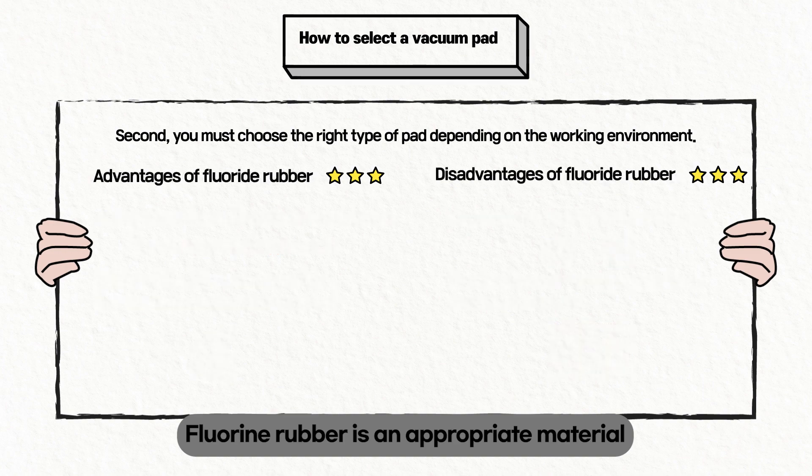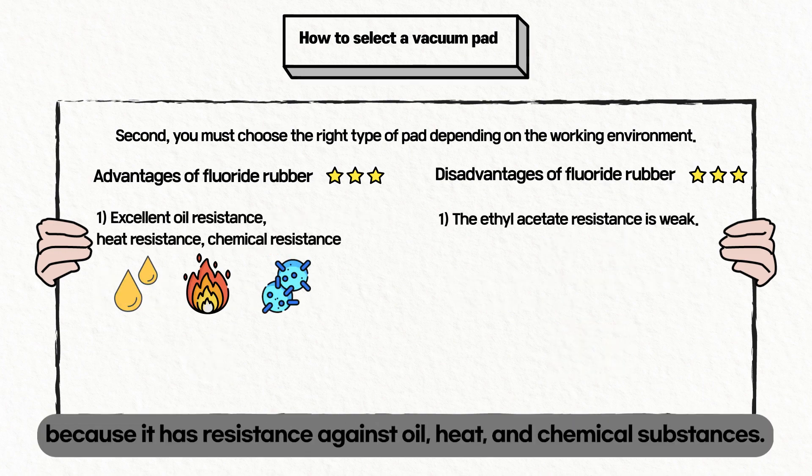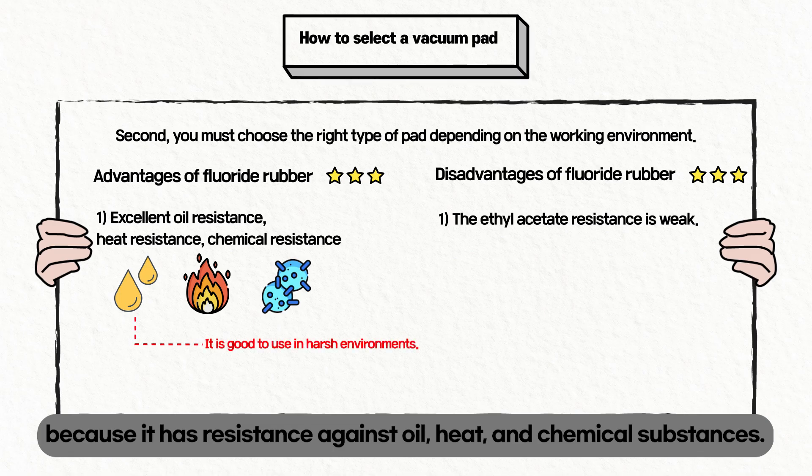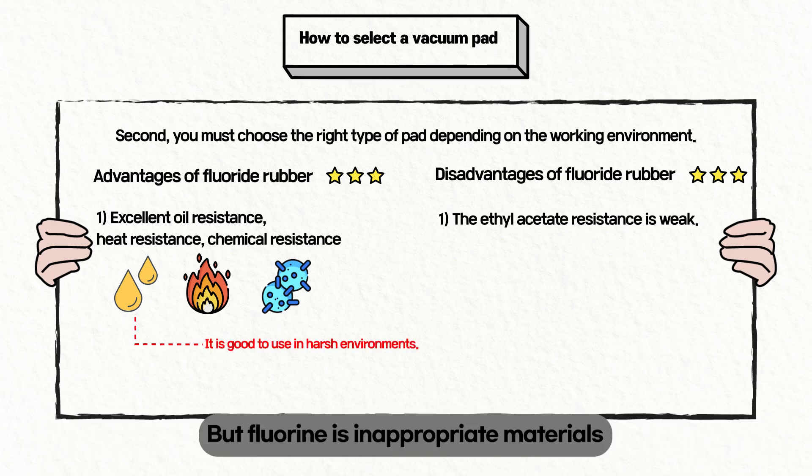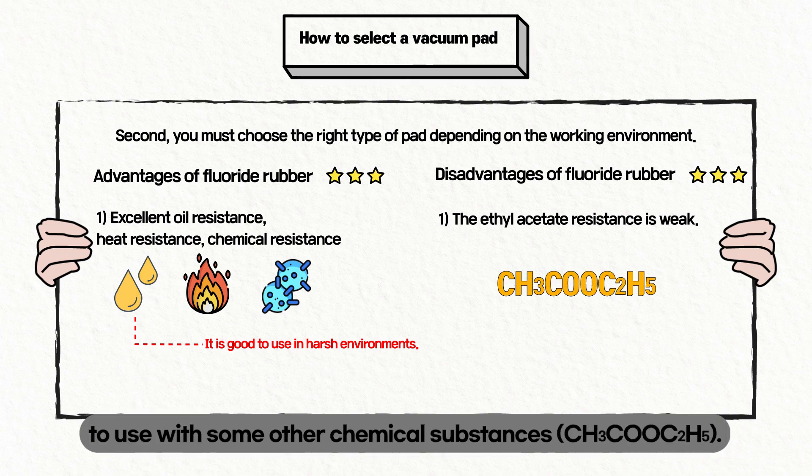Fluorine rubber is an appropriate material to be used in harsh environments because it has resistance against oil, heat, and chemical substances. But fluorine is an inappropriate material to use with some other chemical substances.